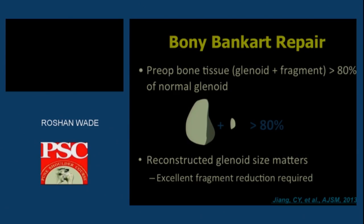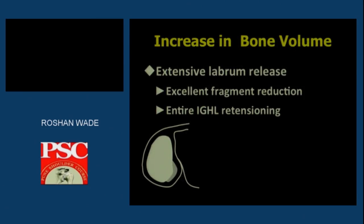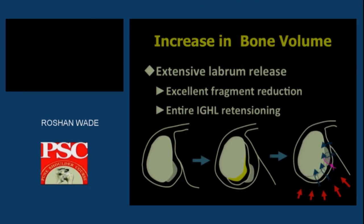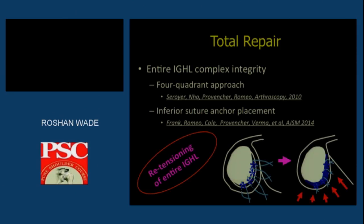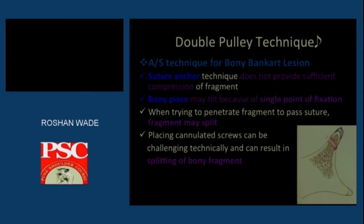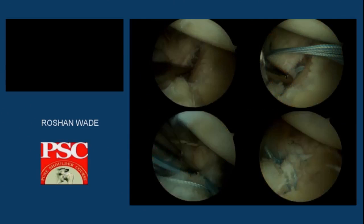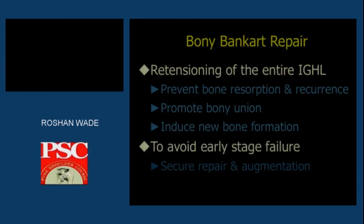After reconstructing the fragment, excellent fragment reduction can be achieved, as demonstrated by Chinyang Jian from China — increased bone volume is noted with bony Bankart repair. The Antonio Romeo group described a total repair where the IGHL is completely fixed onto the glenoid with suture anchors, showing that re-tensioning of the IGHL leads to good shoulder stability. In the double pulley technique, a medial anchor is placed and with a lateral knotless anchor the fragment is fixed onto the glenoid, as shown in this case.